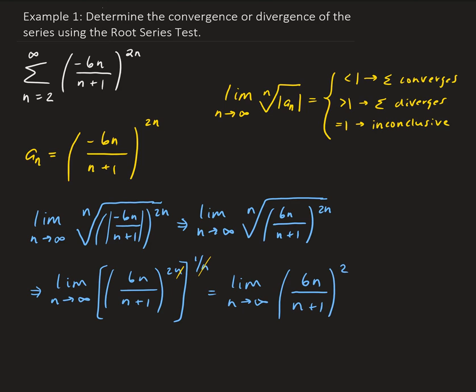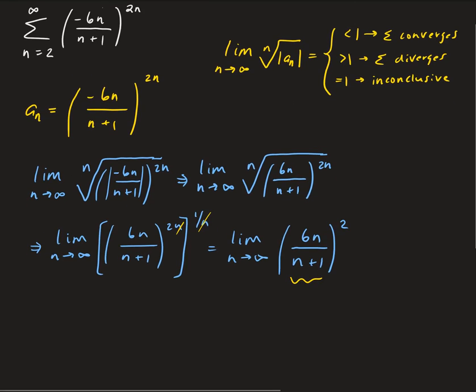So taking the limit of this part, you basically can think of this as a rational function. So the degree in the top is the same as the degree in the bottom, so we're going to get 6 as n approaches infinity for the inside.